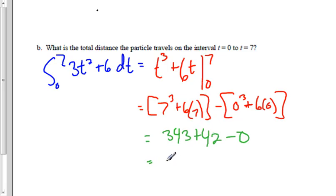Now let's simplify. I get those values, and then 343 plus 42 is 385. So that is the total distance that this particle travels over the interval from 0 to 7.